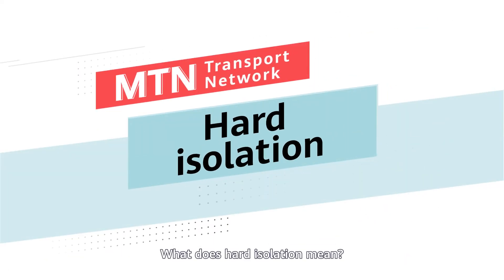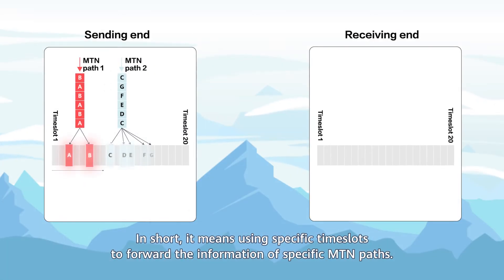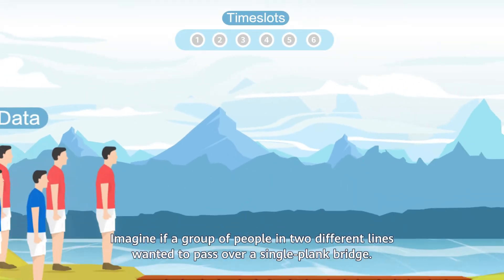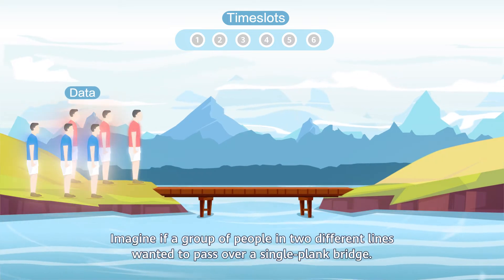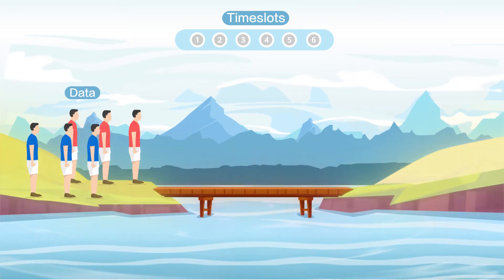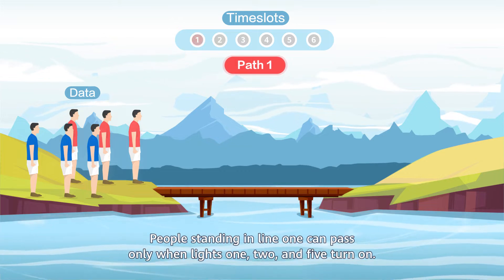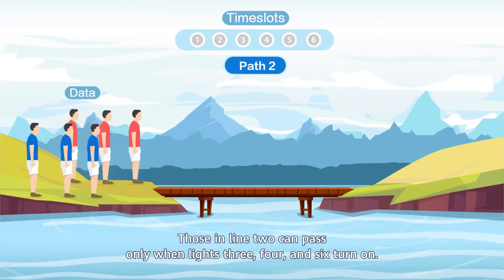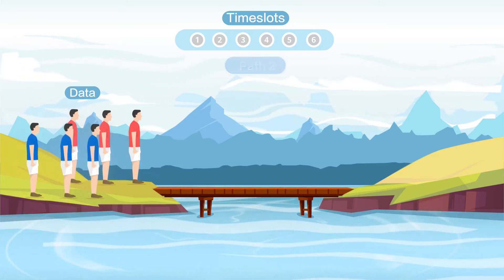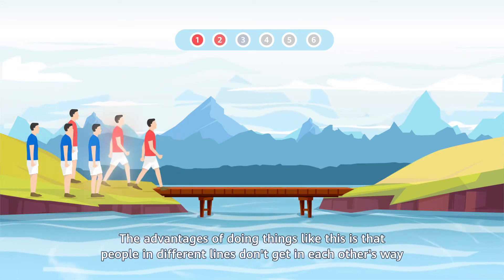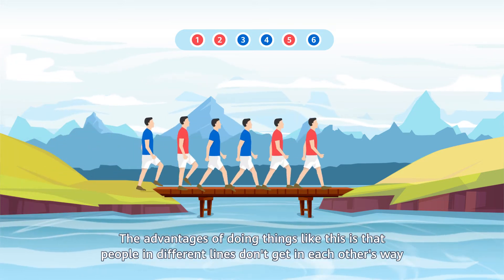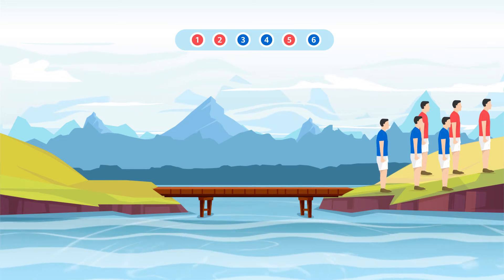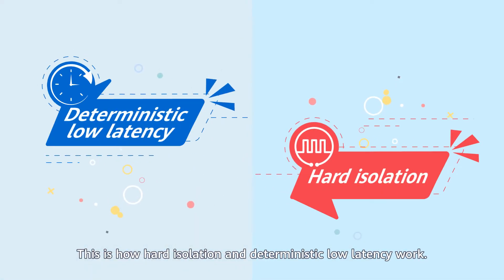What does hard isolation mean? In short, it means using specific time slots to forward the information of specific MTN paths. Imagine a group of people in two different lines wanting to pass over a single plank bridge. People in line 1 can pass only when lights 1, 2, and 5 turn on; those in line 2 can pass only when lights 3, 4, and 6 turn on. This way, people in different lines don't get in each other's way, and waiting times are relatively short and fixed for each line. This is how hard isolation and deterministic low latency work.